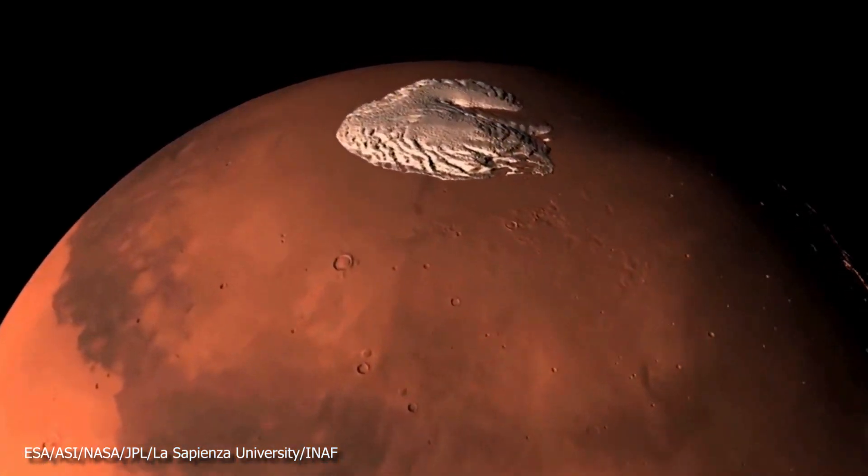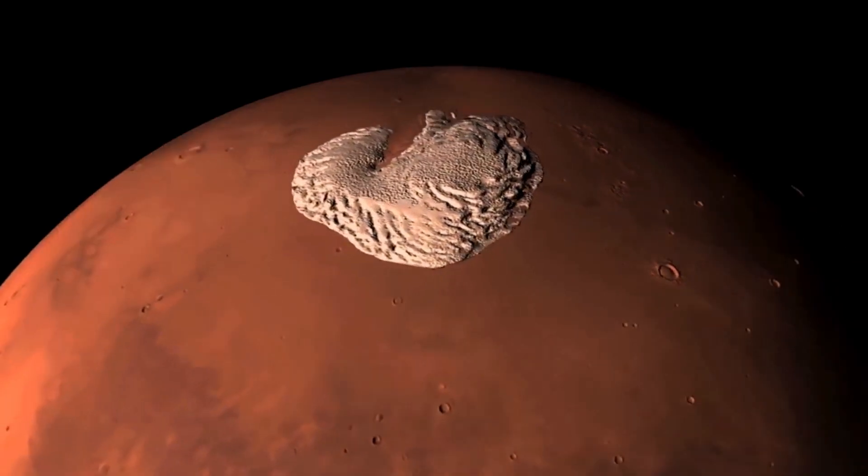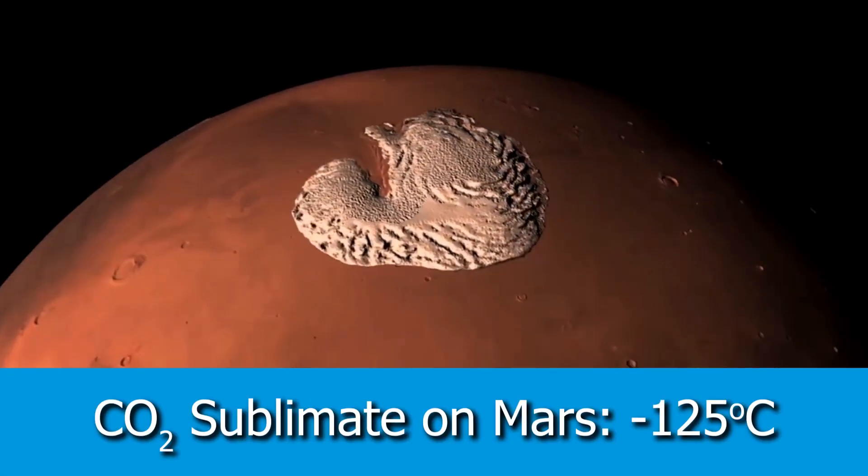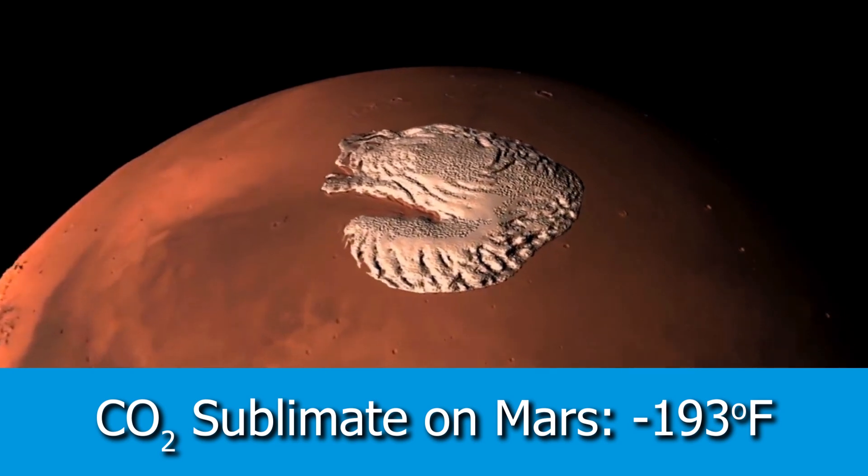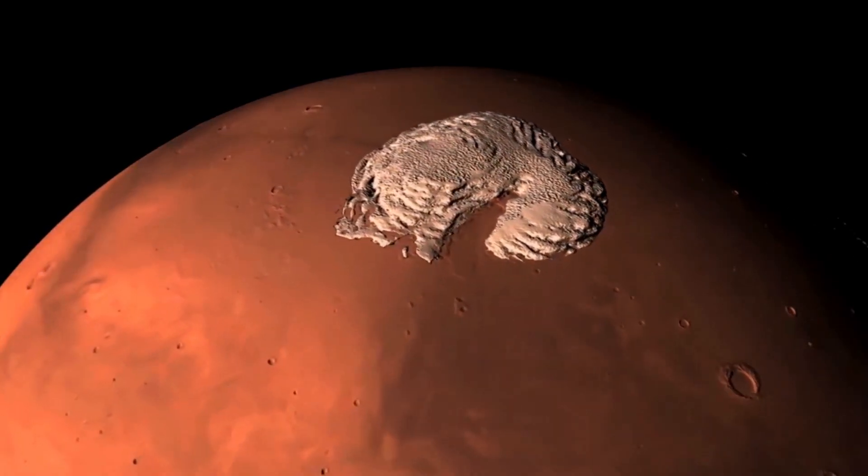And as the temperature at the north pole actually increases, it will pass a certain threshold, which is around negative 125 degrees Celsius. Once it gets past this threshold, the dry ice on the north pole is going to start sublimating. But one second, what is sublimating?